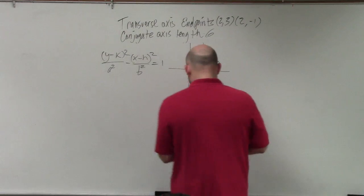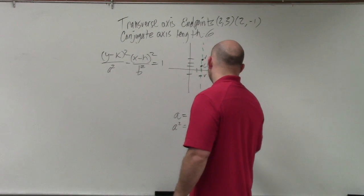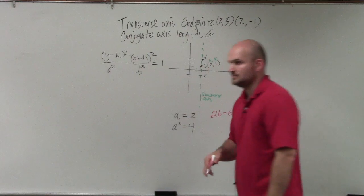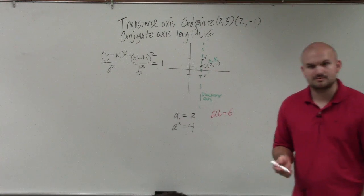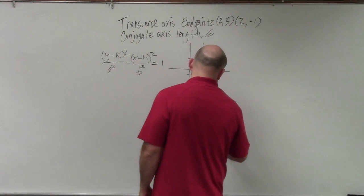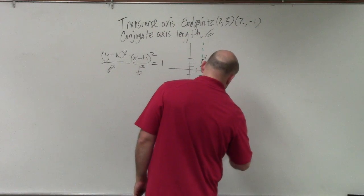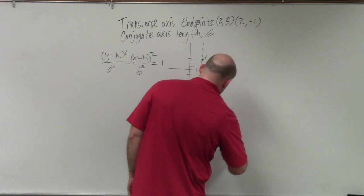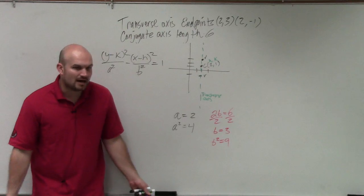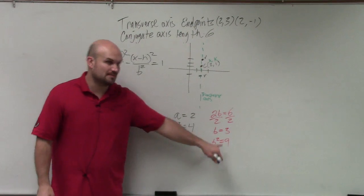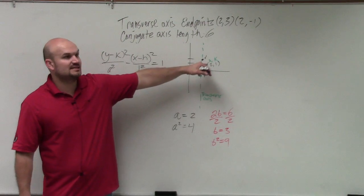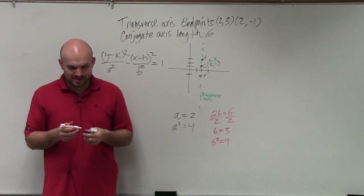So therefore, I can say that 2b equals 6. Can I now solve for what b would be? b equals 3, and therefore, b squared equals 9. So now I have obtained a, I have obtained b, and I have obtained h and k. And now I've just got to plug them into my equation, and I'm done.